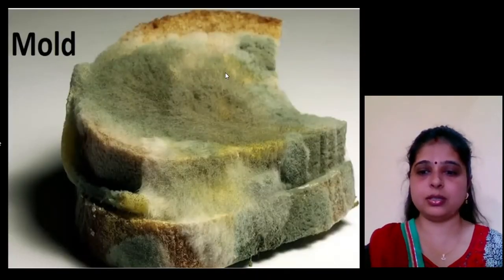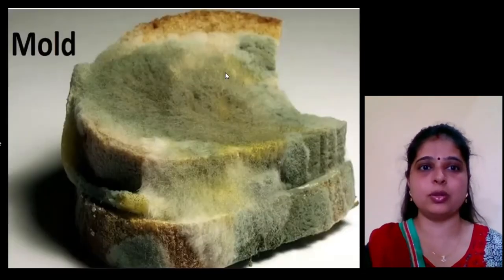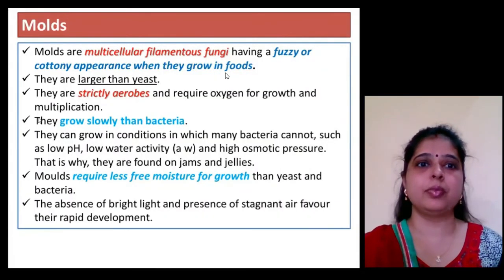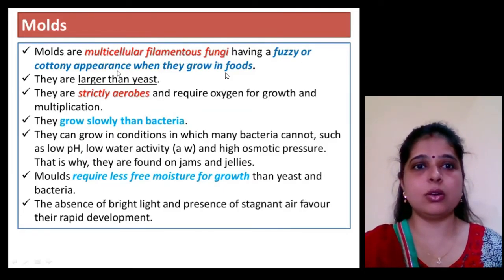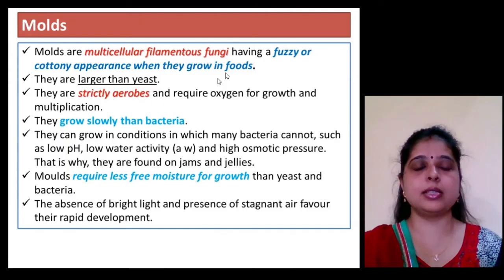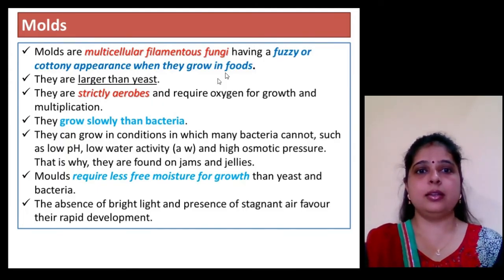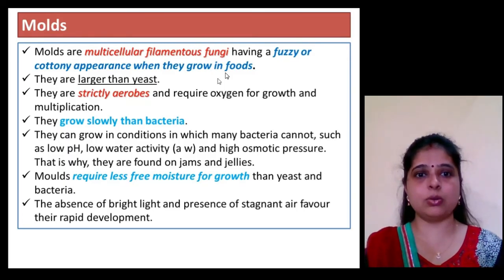The next microorganism is mold. As seen in the figure, mold causes a cottony growth — it is a multicellular filamentous fungi with a fuzzy or cottony appearance when growing in food. Molds are generally larger than yeast, strictly aerobic in nature, and grow more slowly than bacteria.